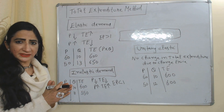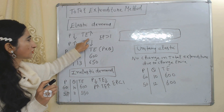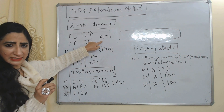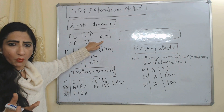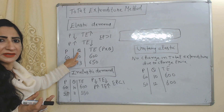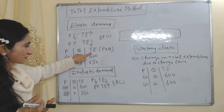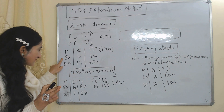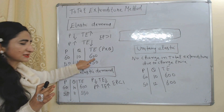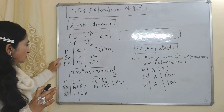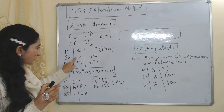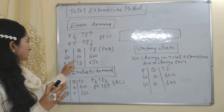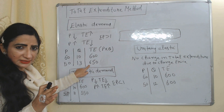Next is the total expenditure method. Here our expenditure depends on elasticity of demand. In the case of elastic demand, when price falls, total expenditure increases; when price increases, total expenditure falls. That is why we say price elasticity of demand is more than one. In the table, the first column is price, the second is quantity demanded, and the third is total expenditure. When price is 60 demand is 10 and total expenditure is 600. When price reduces from 60 to 50, demand increases from 10 to 13, and total expenditure increases from 600 to 650 — this is elastic demand.